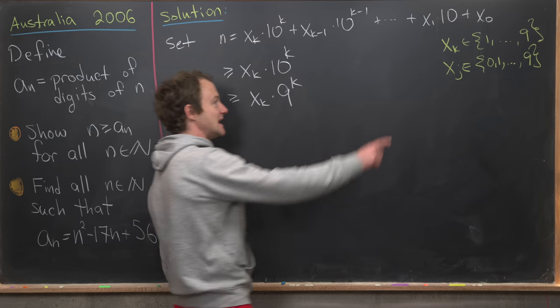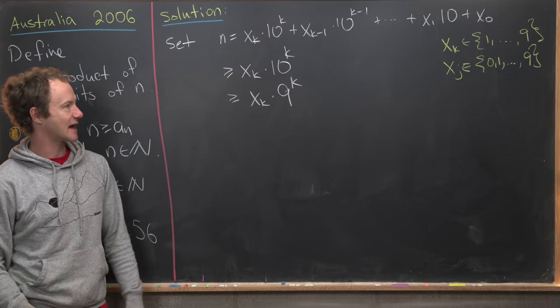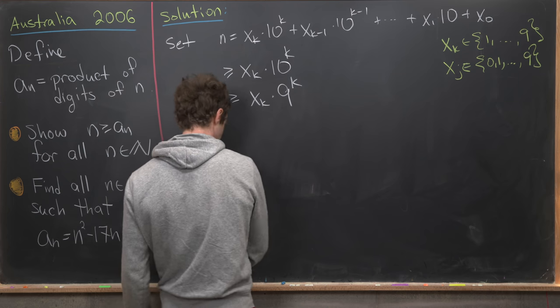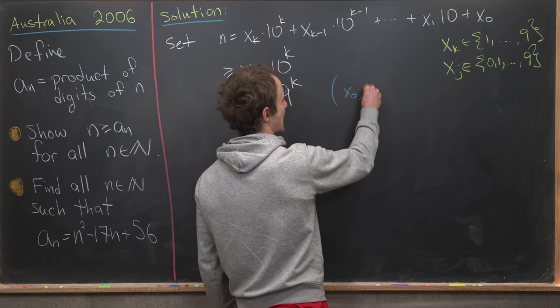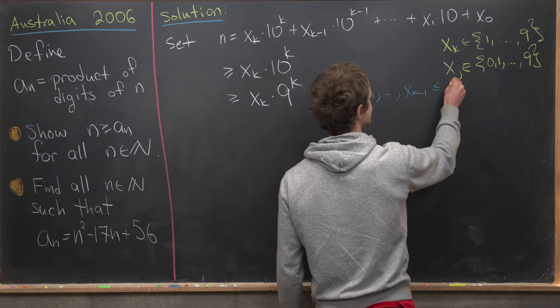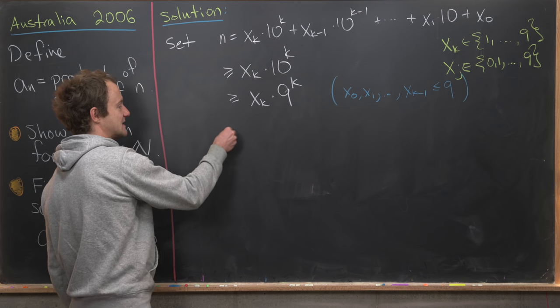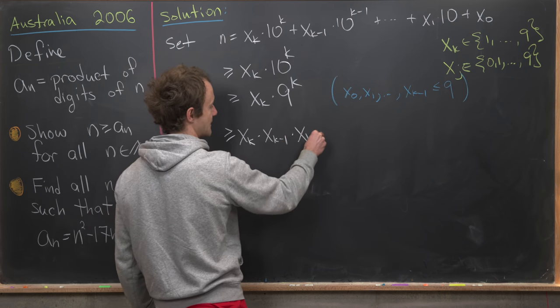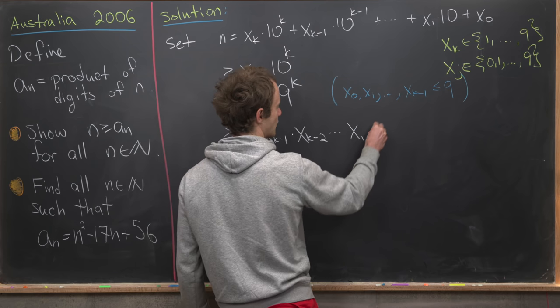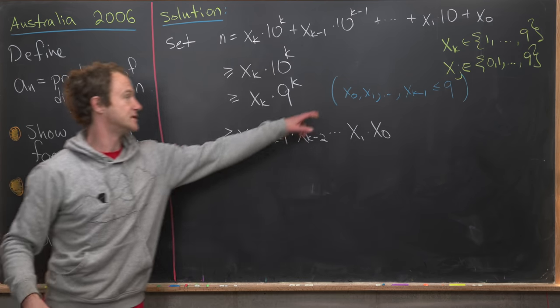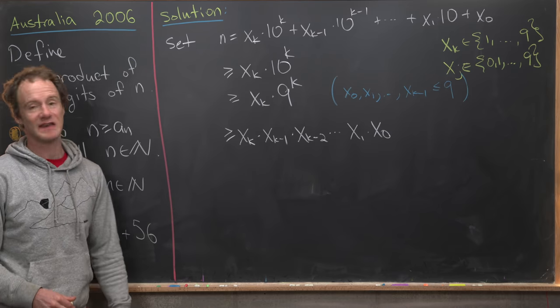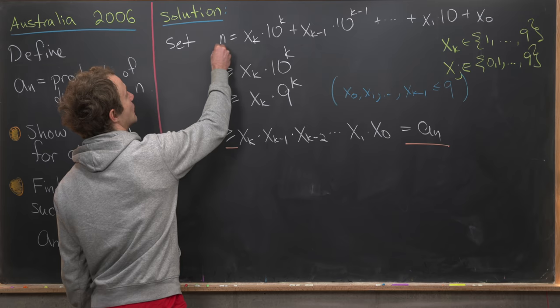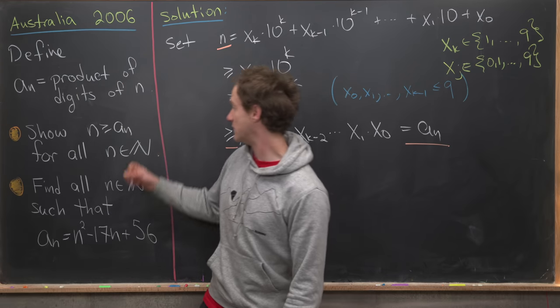Next, we'll notice that each of these x_j's between x_0 and x_{k-1} are between 0 and 9. That means they're less than or equal to 9. So we're going to use the fact that x_0, x_1, all the way up to x_{k-1} is less than or equal to 9. That means we can extend our inequality to say that this is bigger than or equal to x_k × x_{k-1} × x_{k-2}, all the way down to x_1 × x_0. Using this fact, notice that that's exactly the definition of our sequence. This is equal to a_n. Now looking at the extreme left and right hand side of this inequality, we see that we have achieved this first goal.